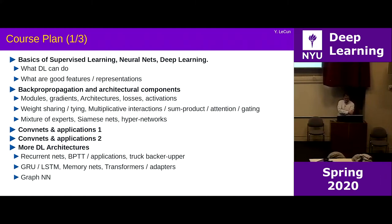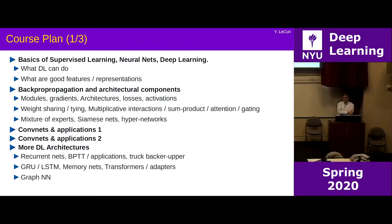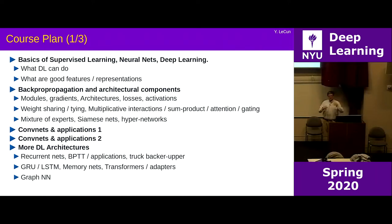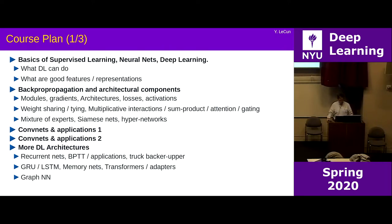The first topic is intro to supervised learning, neural nets, and deep learning — what deep learning can do, what it cannot do, and what are good features. Deep learning is about learning representations. Next week will be about backpropagation and basic architectural components: building neural nets out of modules connected to each other, computing gradients, automatic differentiation, and various types of architectures, loss functions, activation functions, and different modules. Tricks like weight sharing, weight tying, multiplicative interactions, and attention gating.